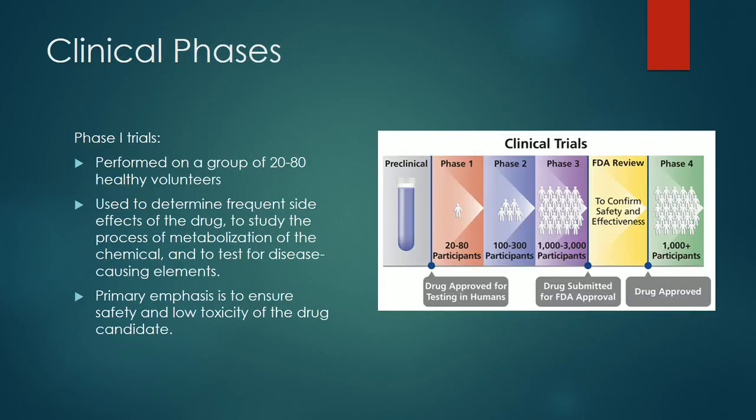The third major stage is the clinical testing stage. It's broken down into four phases. Phase 1 trials are performed on a group of 20 to 80 healthy volunteers. This step mostly focuses on safety, side effects, and how the molecule is broken down by the body and metabolism.